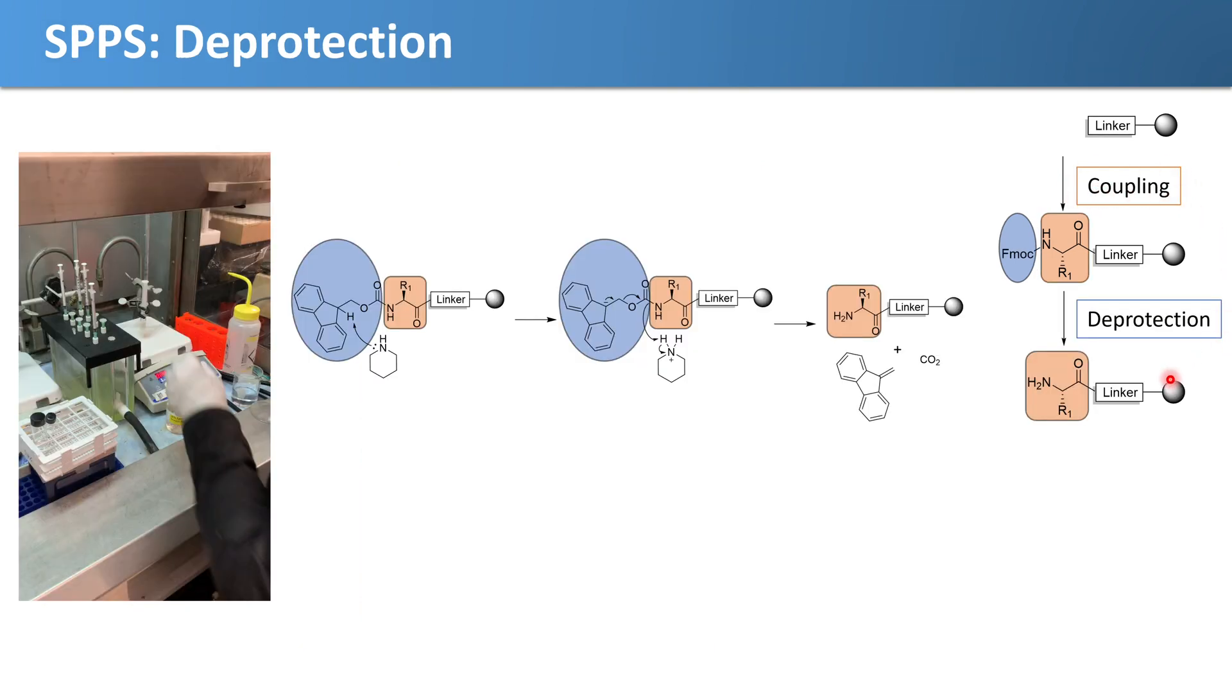The next step is referred to as a deprotection. This blue circle here off of our first amino acid is a protecting group, it's an FMOC group. In order to continue on with the synthesis, we have to remove this group first, hence the deprotection name.